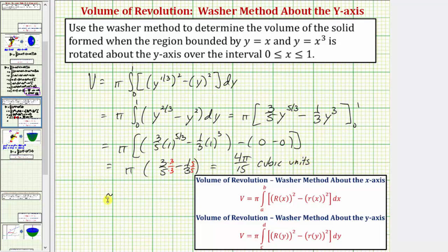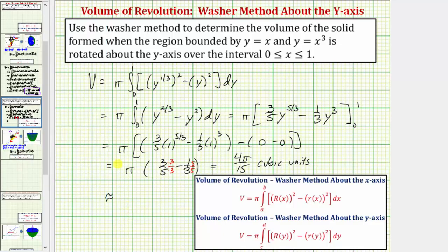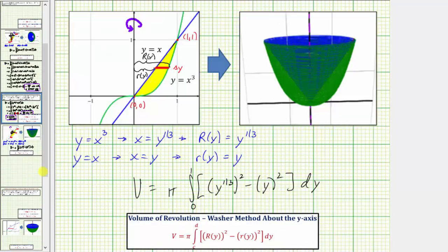We can also look at the decimal approximation: four pi divided by fifteen is approximately 0.8378 cubic units. So here is the exact volume and here is the approximate volume, which is the volume of this solid formed by rotating the bounded region about the y-axis. I hope you found this helpful.